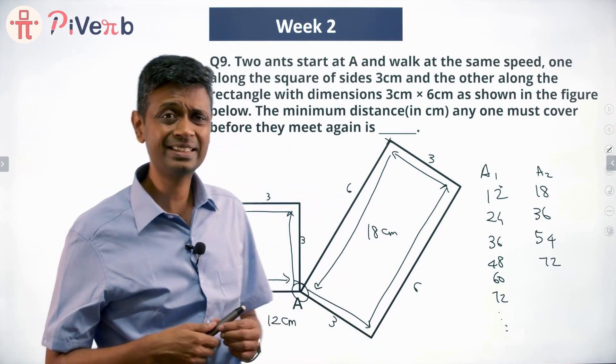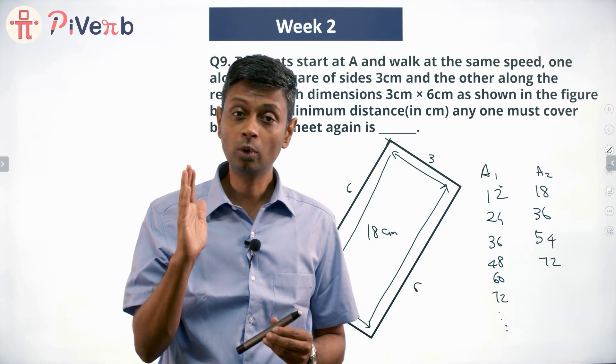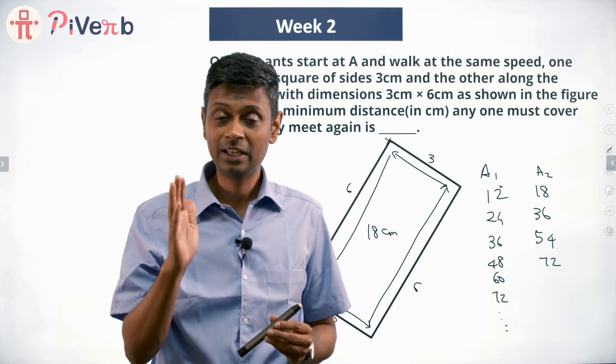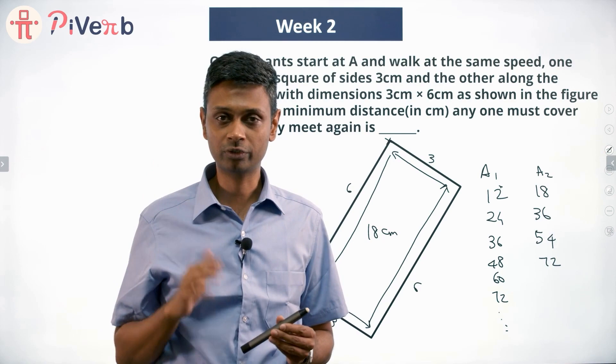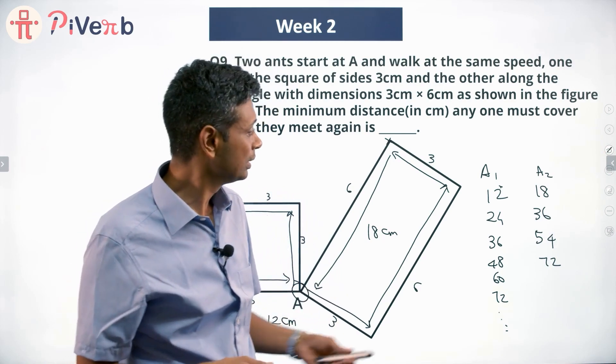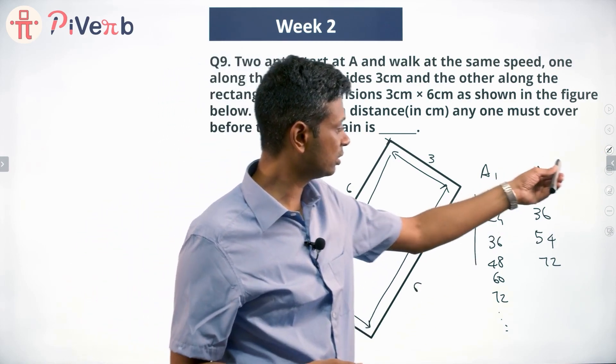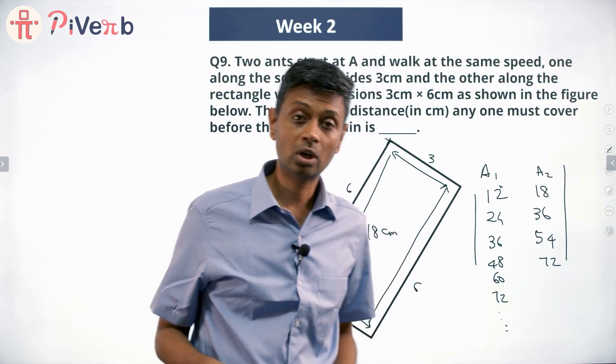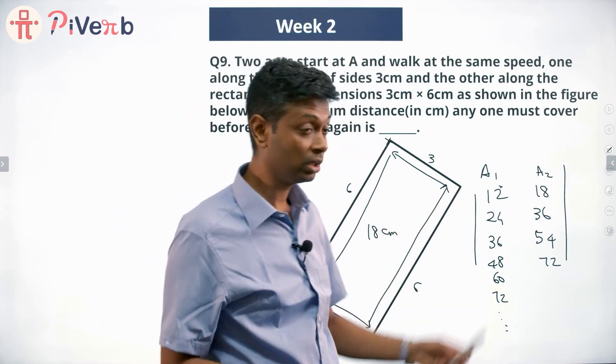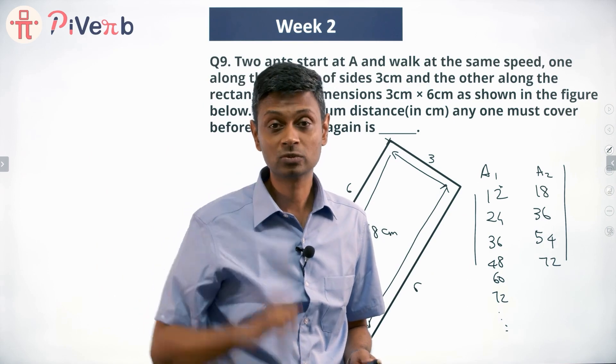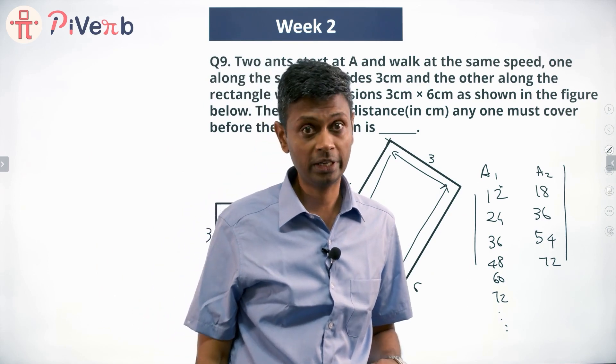They are both traveling at the same speed. So they will be at A if they have traveled the same distance at some point of time. At any point of time there is a number common between this list and this list, we are through. Or we are looking for a multiple of 12 to happen to be a multiple of 18. Or we are looking for a common multiple of 12 and 18.